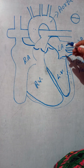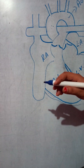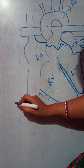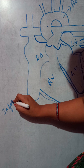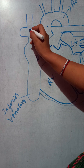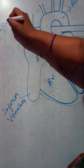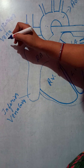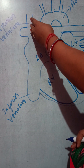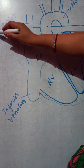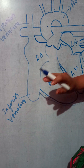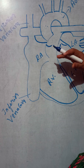Now let's look at the deoxygenated blood — how it works and how it gets pumped in the heart. Here you can see two structures: this is the inferior vena cava and this one is the superior vena cava. These are veins which collect the deoxygenated blood from our body. The superior vena cava collects blood from the upper part of our body, and the inferior vena cava collects deoxygenated blood from the lower parts of our body.